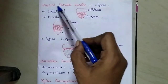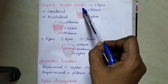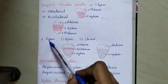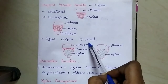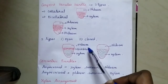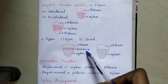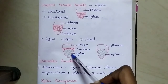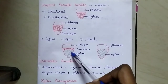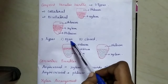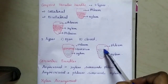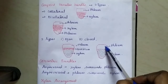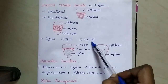Again, the conjoined vascular bundle is classified into two types: one is open and another one is closed, based on the presence of cambium tissue. If the cambium tissue is present between the xylem and the phloem, it is said to be open. If the cambium is absent between the xylem and the phloem, it is said to be closed.